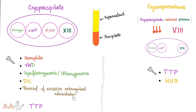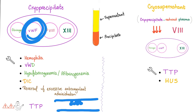Contraindications: do not give cryoprecipitate for TTP, because what triggered TTP in your blood vessels were platelet microthrombi and von Willebrand factor multimers. Don't give something that contains von Willebrand factor — you will add insult to injury. It's like giving whole blood to a patient with IgA deficiency. Cryosupernatant, on the other hand, is low in factor 8 and may have lower levels of von Willebrand factor, which is why you might be able to use it in TTP or HUS. So for TTP or HUS, choose cryosupernatant over cryoprecipitate.